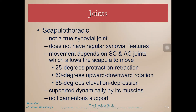The scapulothoracic joint is not a true synovial joint because it doesn't have synovial features like a synovial membrane or fluid, but the scapulae do articulate across the rib cage. Movement depends on the SC and AC joints. We have 25 degrees of protraction and retraction, 60 degrees of upward and downward rotation, and 55 degrees of elevation and depression. The scapulothoracic joint is supported dynamically by its musculature — the muscles that support the scapulae stabilize it and help position the shoulder for higher ranges of motion. It has no ligamentous support.